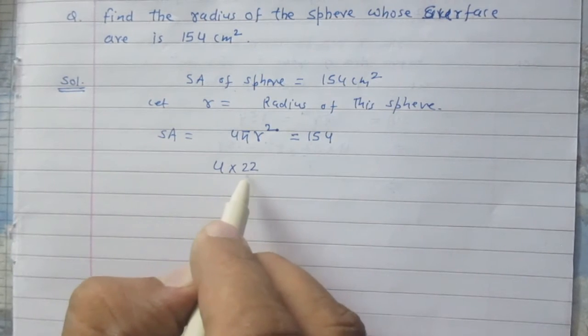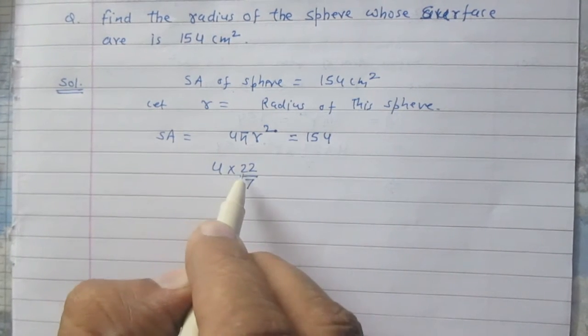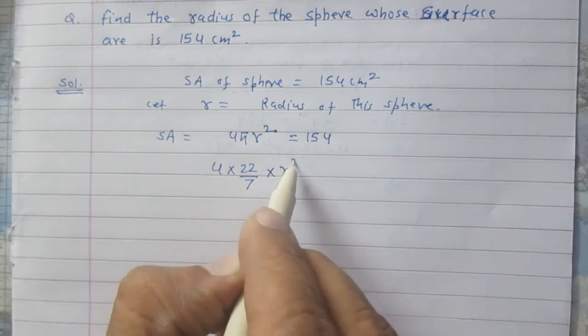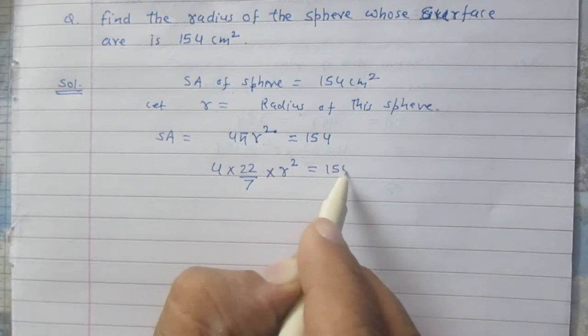The value of π is 22/7, so it is 4 × 22/7 × r² = 154.